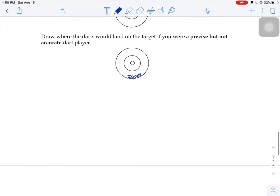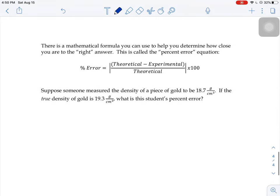There is a mathematical formula to help you see how close you are to the right answer, how accurate you are. This mathematical formula is called the percent error equation. When you're calculating percent error, you would do the theoretical answer minus the experimental over the theoretical.